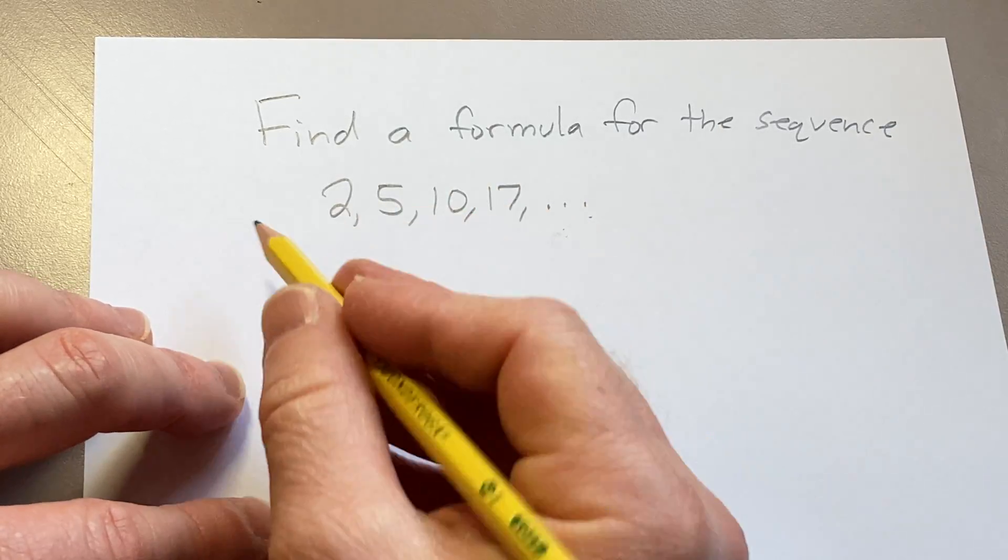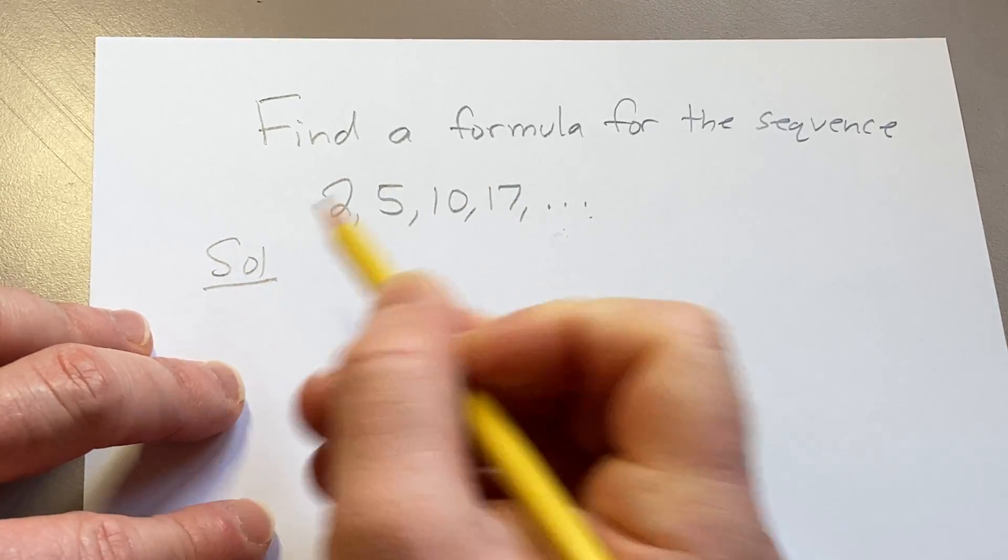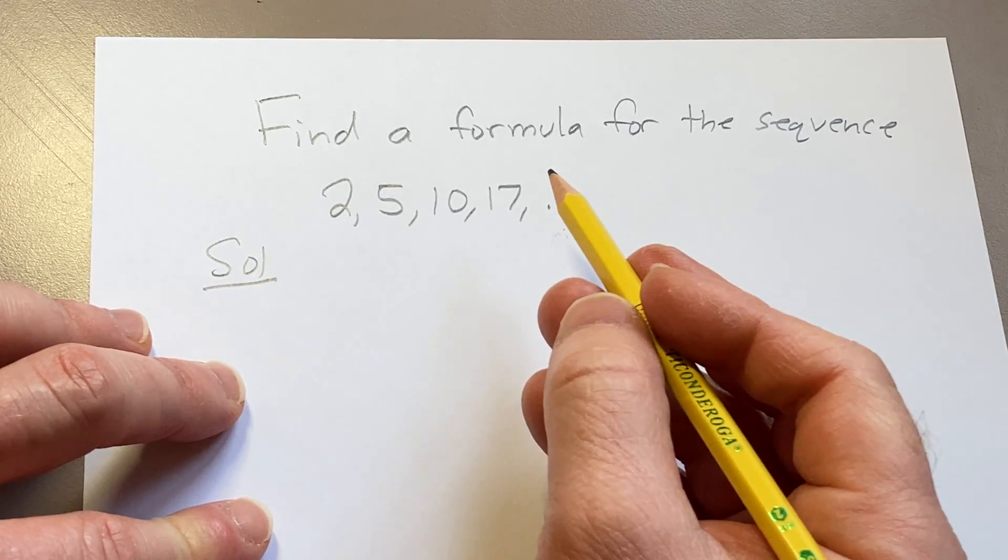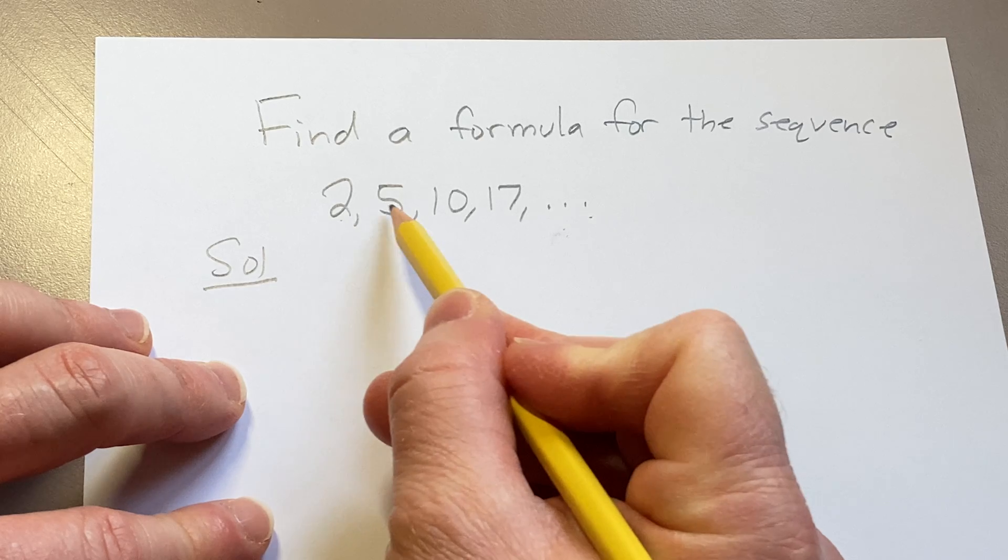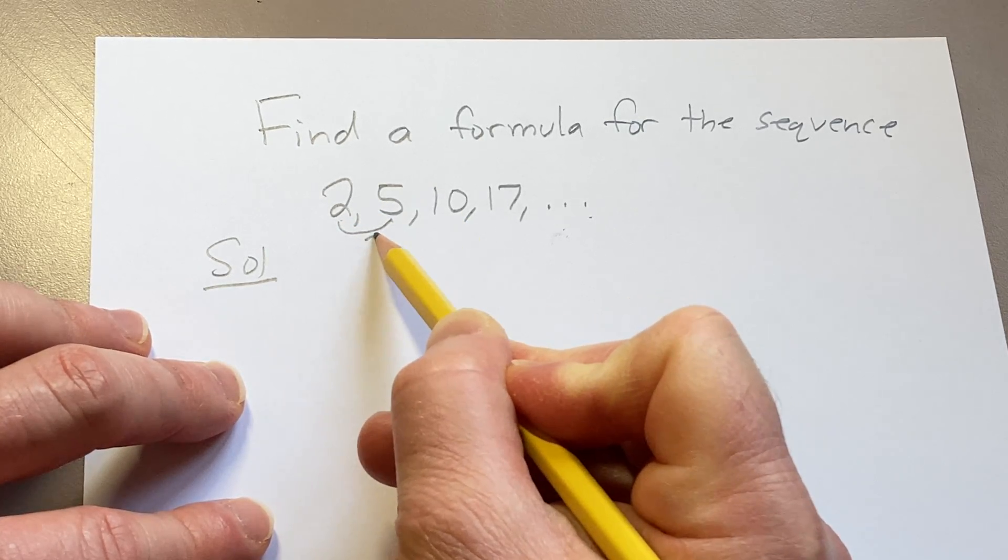Let's go through the thought process of figuring out a pattern for the sequence. So the first thing to look at is the distance between the numbers. For example, to get from here to here you have to add 3.